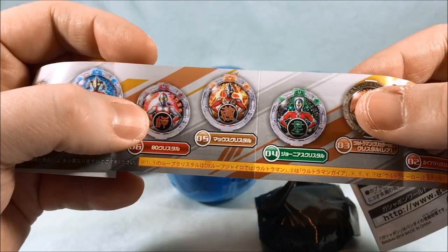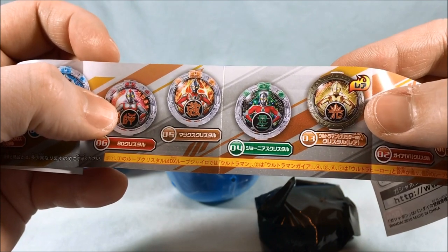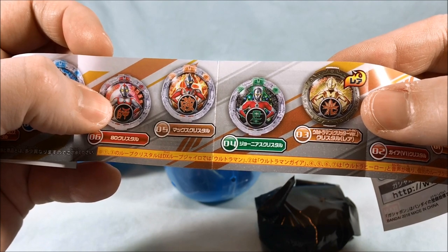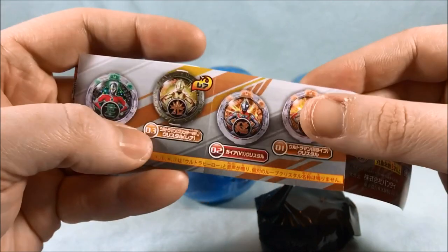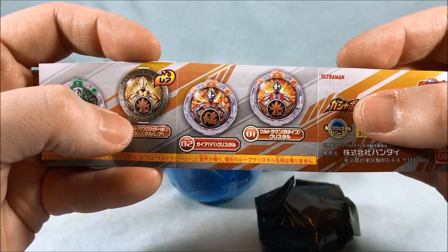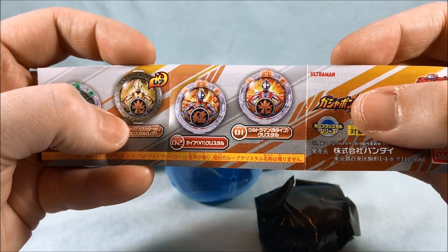Then we have 80. This one is Max. Then Jonas, that's the anime one. Then we have a super rare one. And then we have Gaia V1 and Ultraman B type.